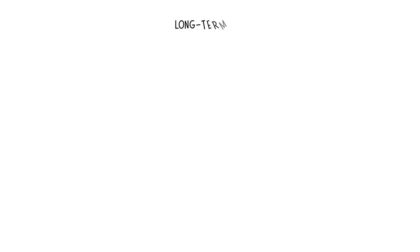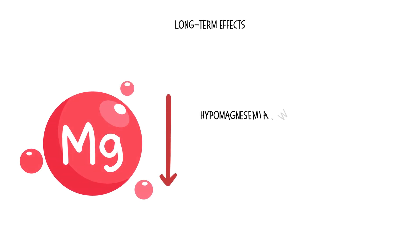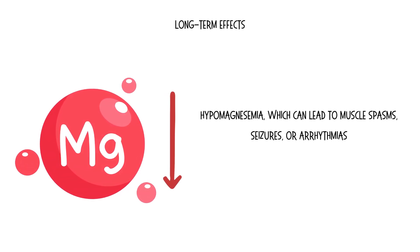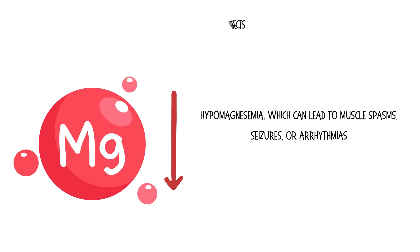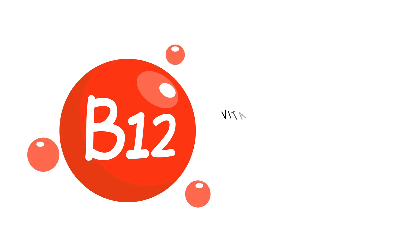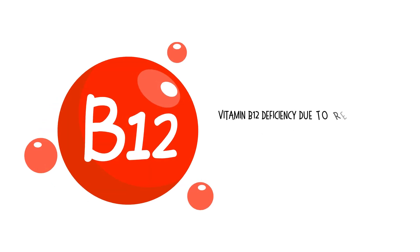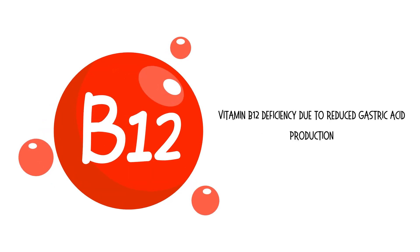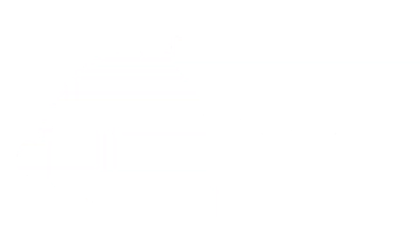Long-term effects include hypomagnesemia, which can lead to muscle spasms, seizures, or arrhythmias, as well as vitamin B12 deficiency due to reduced gastric acid production.